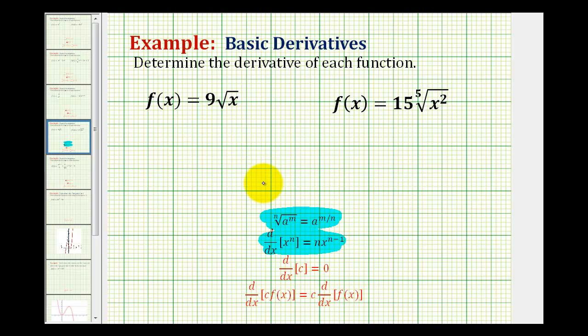So as a quick example, if we had something like the cube root of x squared, in rational exponent form, this would be x to the power of two-thirds. So the index tells us the denominator of the rational exponent, and the exponent tells us the numerator.